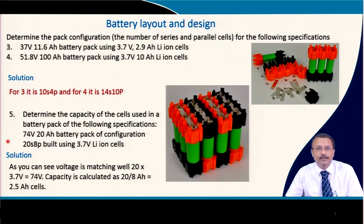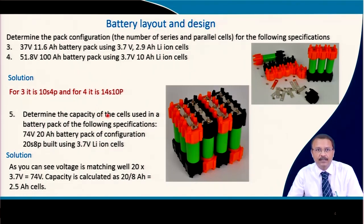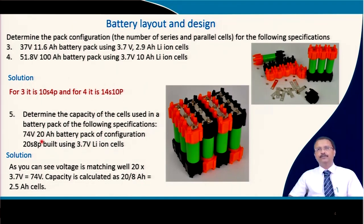You should also be able to determine the capacity of the cell used in a battery pack given the specifications. For example, a 74 V, 20 Ah battery pack of configuration 20S8P using 3.7 V lithium-ion cells: the voltage matches because 20 × 3.7 = 74 V, and the capacity per cell is 20 ÷ 8 = 2.5 Ah. So you need 2.5 Ah cells.